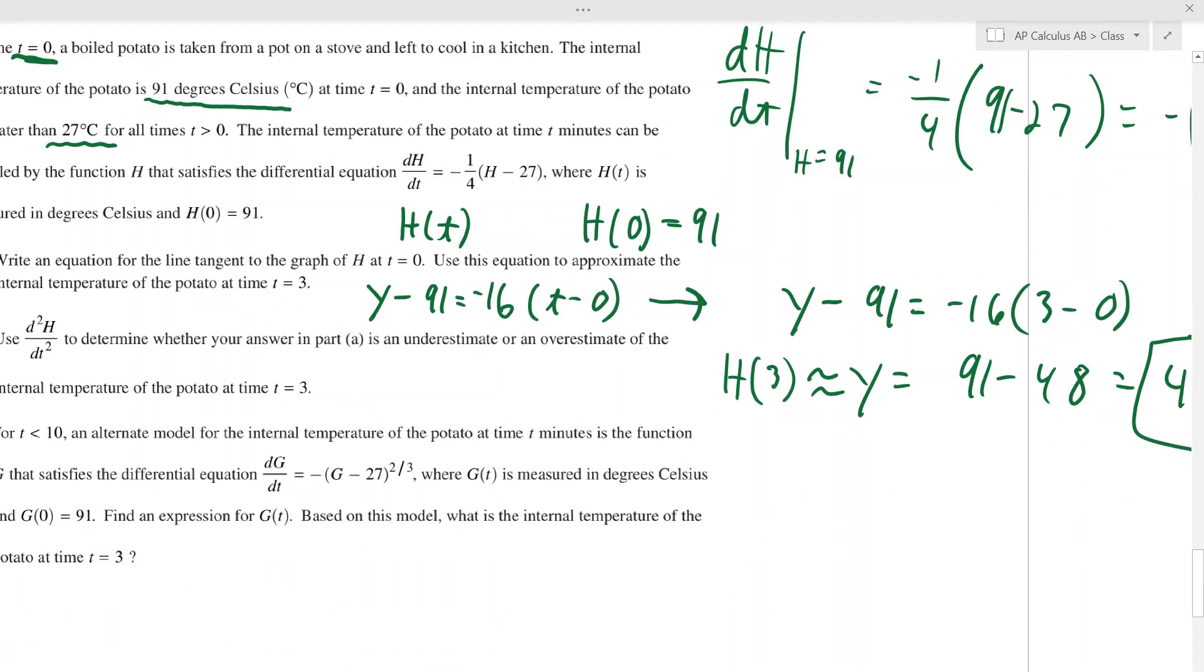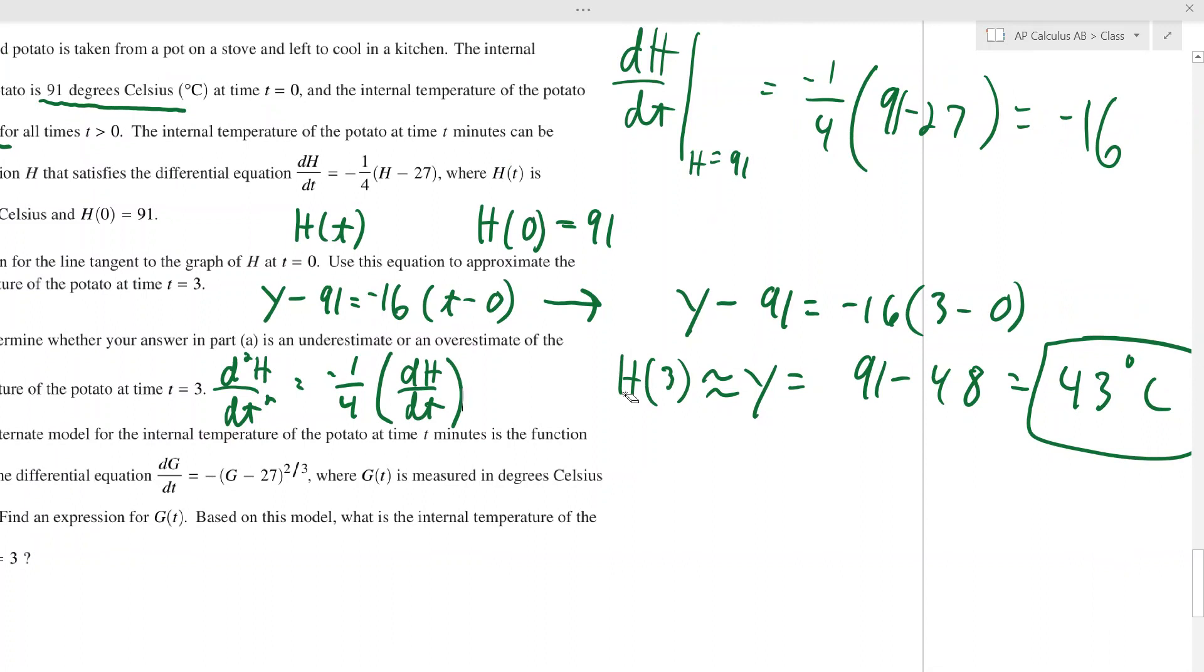But the second derivative is not hard. Just keep in mind when we derive this thing, the left-hand side will become d squared h over dt squared. We're just deriving the first derivative. But when you derive it, another common mistake kids will make is they'll derive h and get one. But you don't get one when you derive h because we're deriving with respect to t. When you derive h, you're going to get a dh/dt.